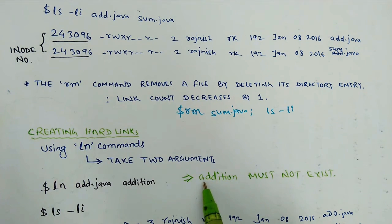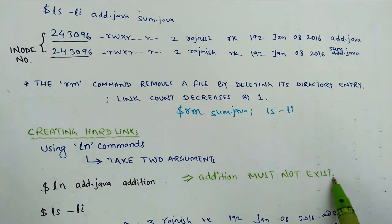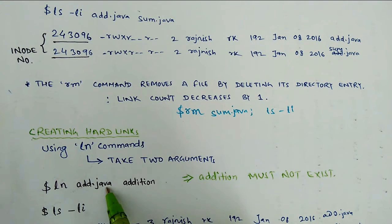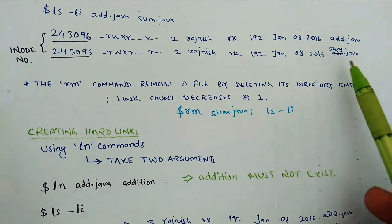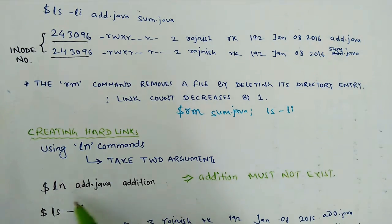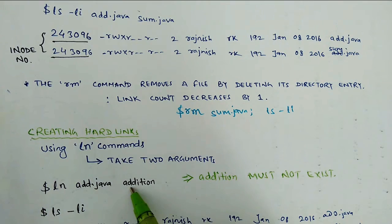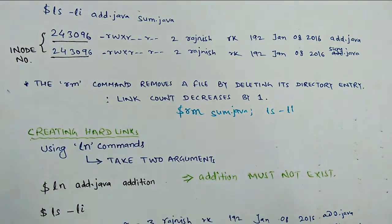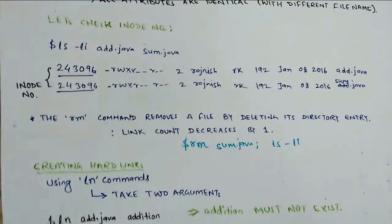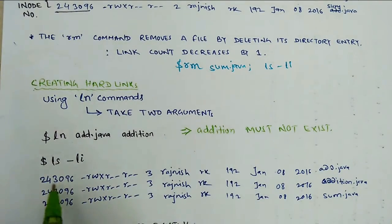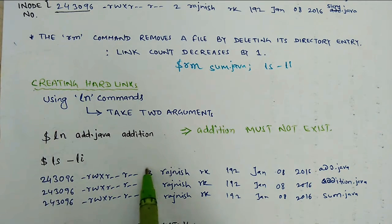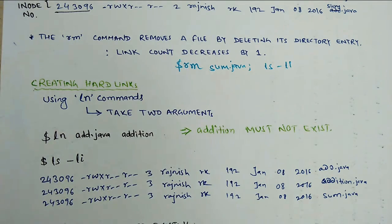Addition must not exist. But add.java exists. Now we can see that add.java and sum.java file will be created by ln command. This means that the number of links will be greater than 1. Now we can see the output of this terminal. So this is all about the hard link.